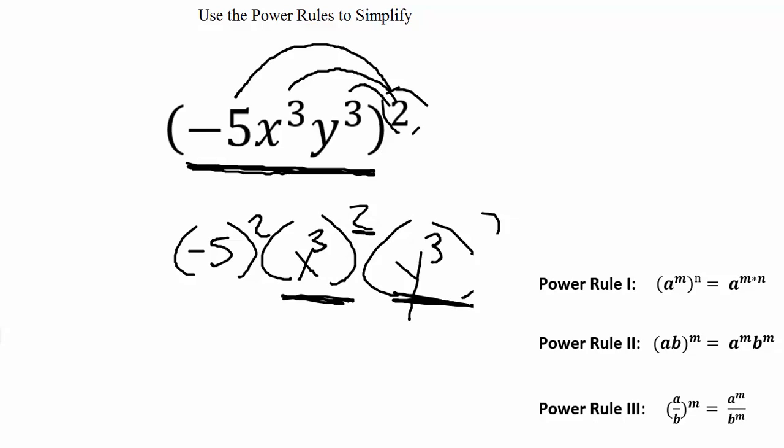In the front we have negative 5 squared. Negative 5 times negative 5 is positive 25. For x³ squared, keep the x and multiply the exponents: 3 times 2 gives us 6.